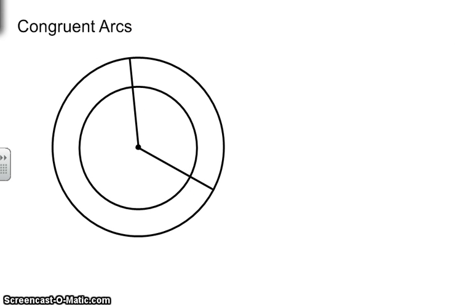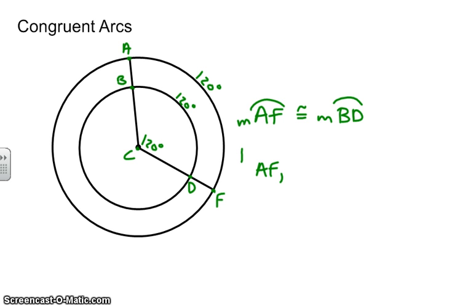In congruent arcs or concentric circles, I want you to recognize the difference between measures and lengths here. So for example, if the central angle is 120, we know that the intercepted arc will also be 120, and so will this intercepted arc. So if you put letters A, B, C, D, and E for each one of those intersection points, I just wanted to make sure you knew the difference between arc.